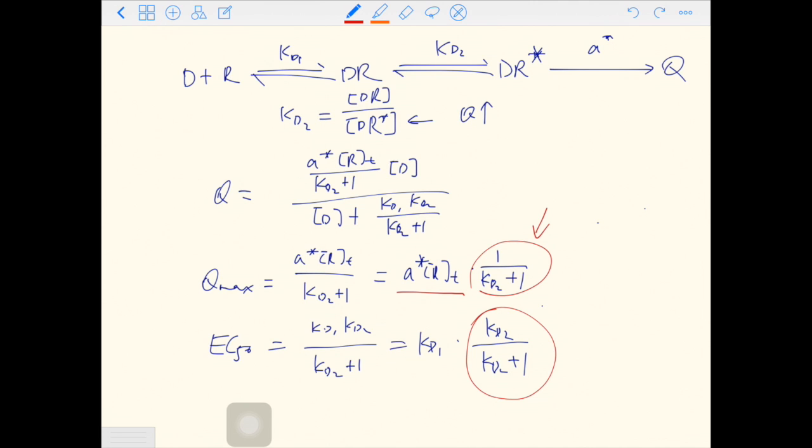When Kd2 is extremely large, this term will become 0. So Qmax will be 0. In other words, the drug is an antagonist.